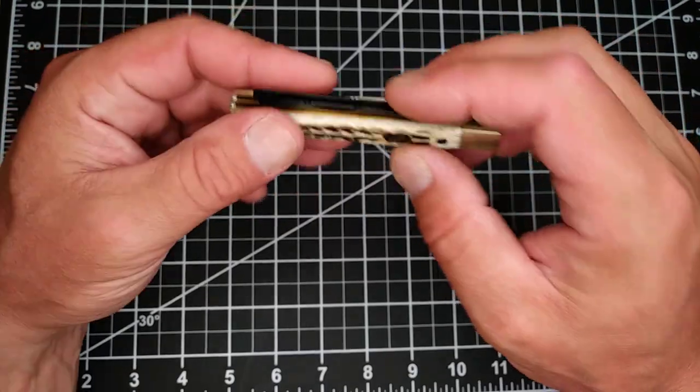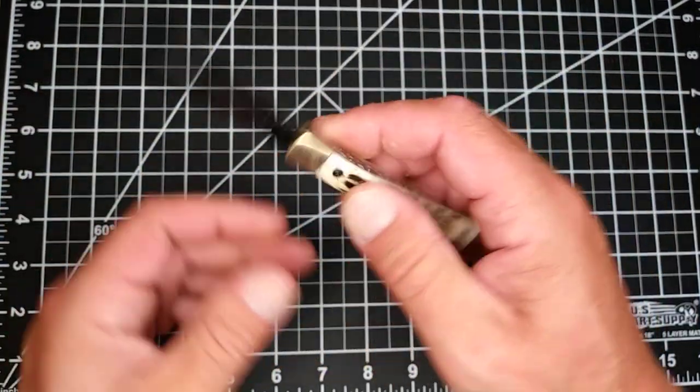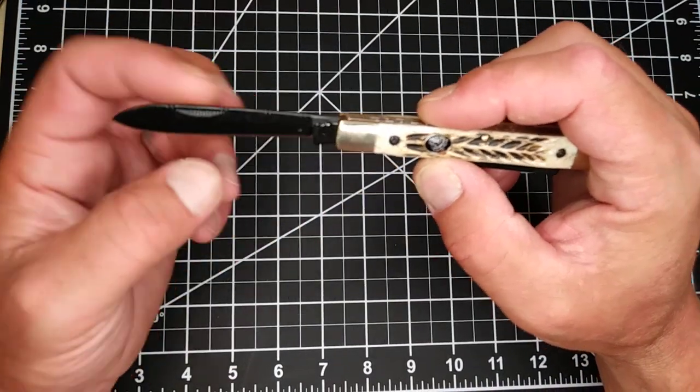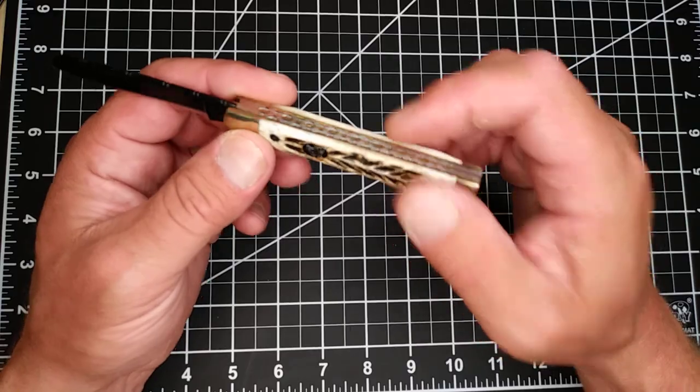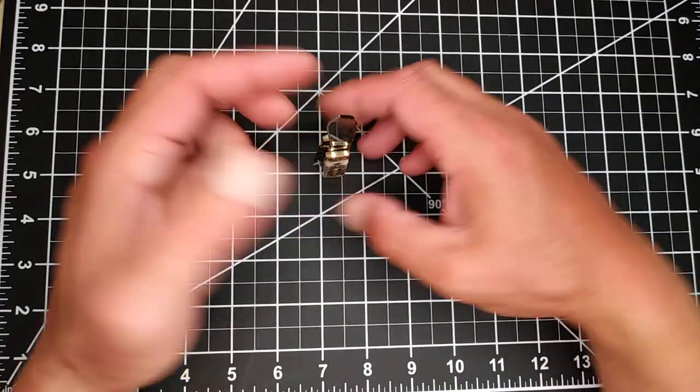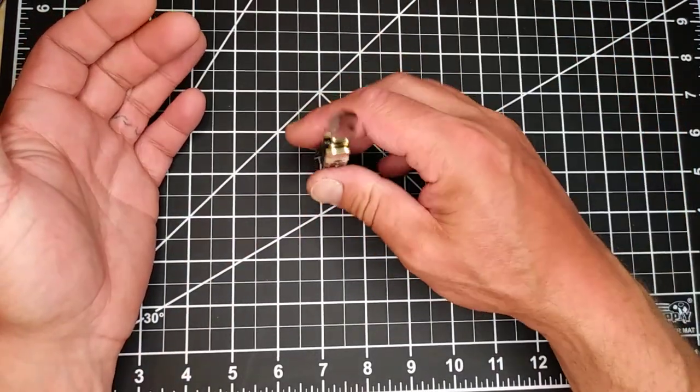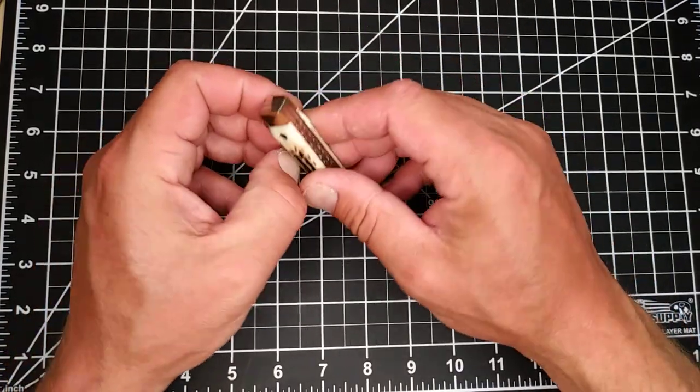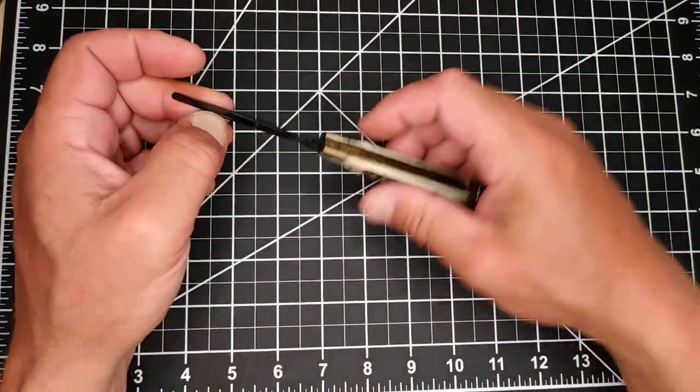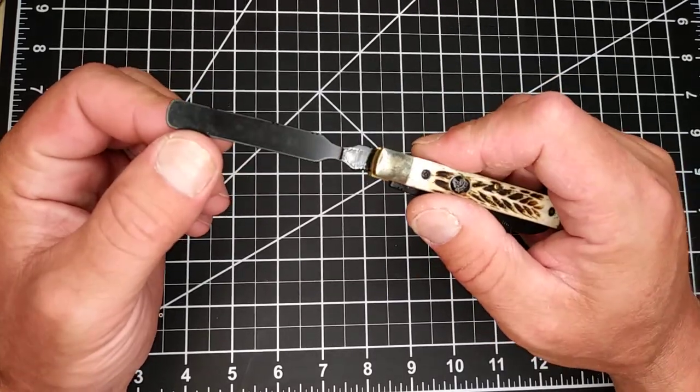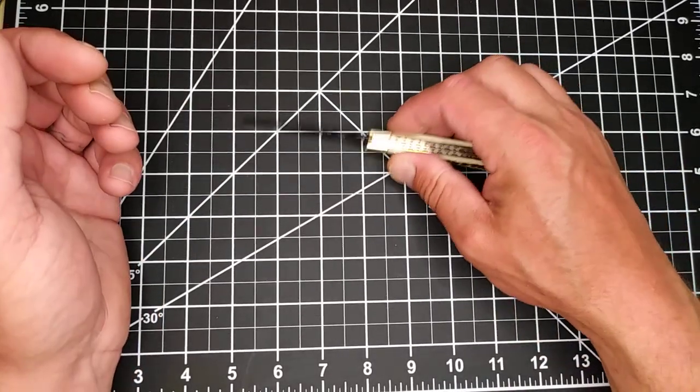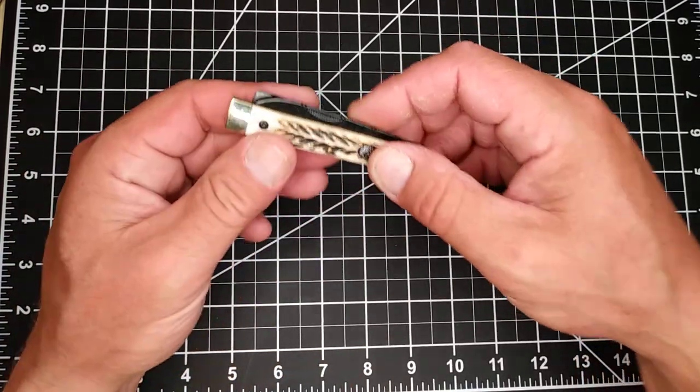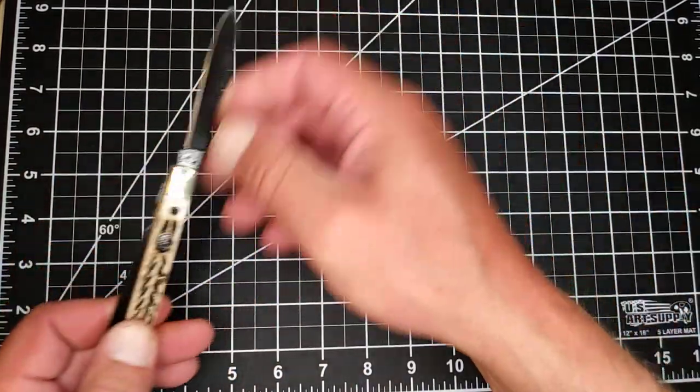This is obviously the doctor's knife. You got the file work, got the black blade, file work on the back. It's flat on the bottom, you can stand it up. They used to use these to crush pills. I don't feel a half stop. And the tongue depressor, or you can move pills around. Very cool, my first doctor's knife.